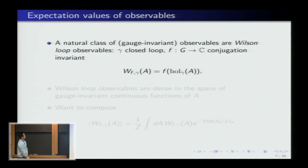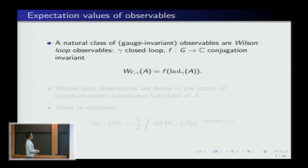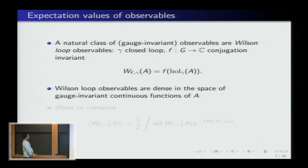The natural class of observables in gauge theories are Wilson loops. To specify a Wilson loop, I give a closed loop and a class function on the gauge group G — a conjugation-invariant function, such as the trace in an irreducible representation. As a functional on the space of connections: I feed in a connection, compute the holonomy of that connection around the loop, obtain an element of G, and feed it into the class function. This gives a well-defined gauge-invariant function. Such observables form a dense set in the space of gauge-invariant continuous functions.